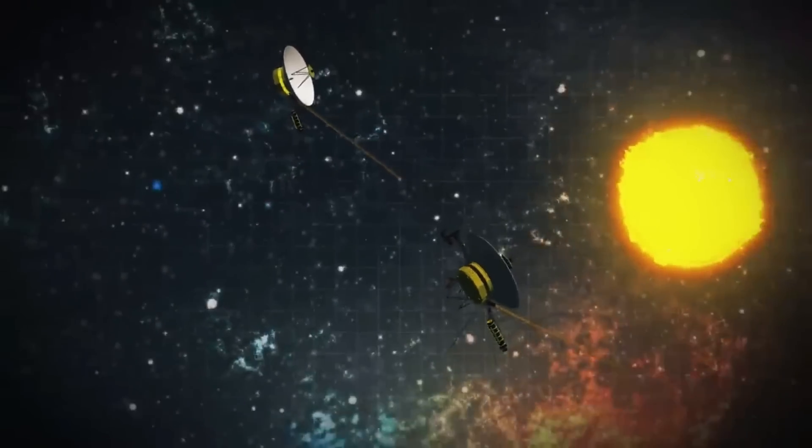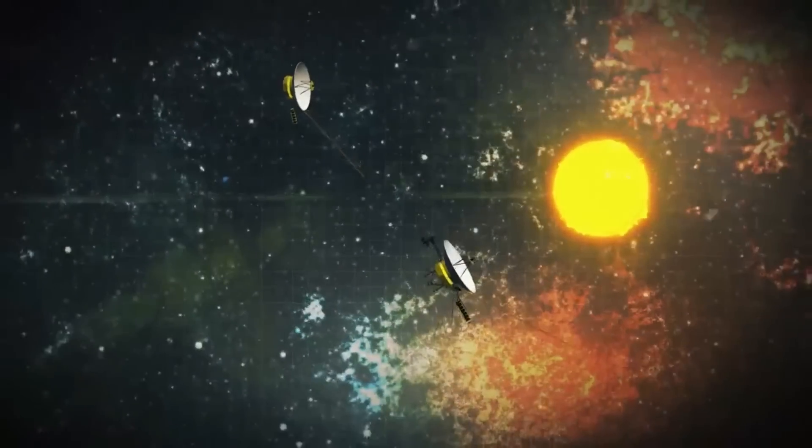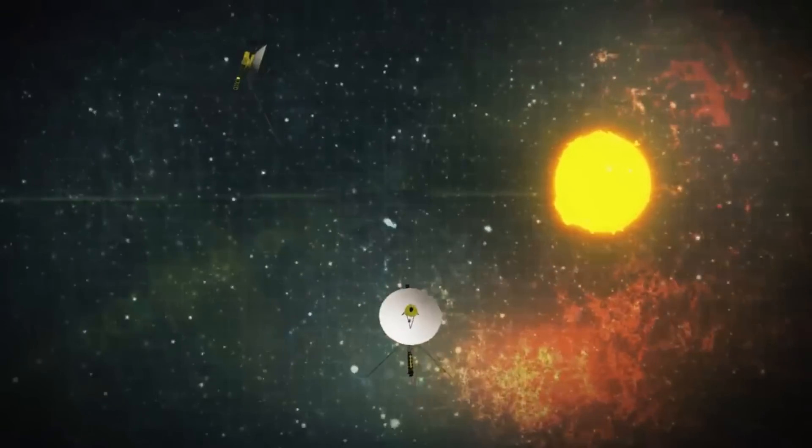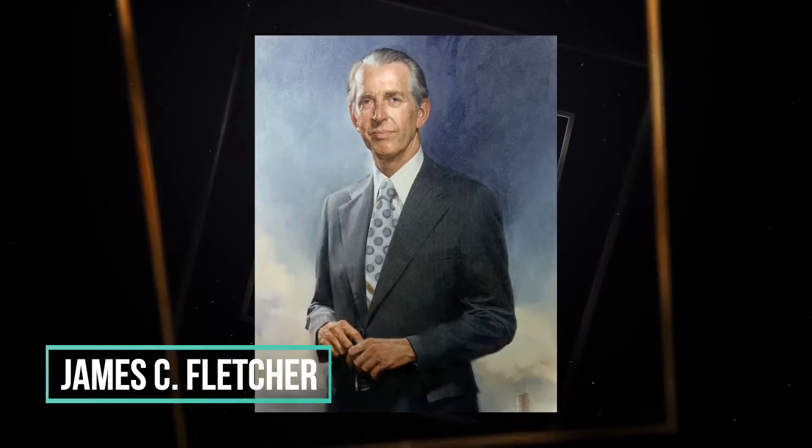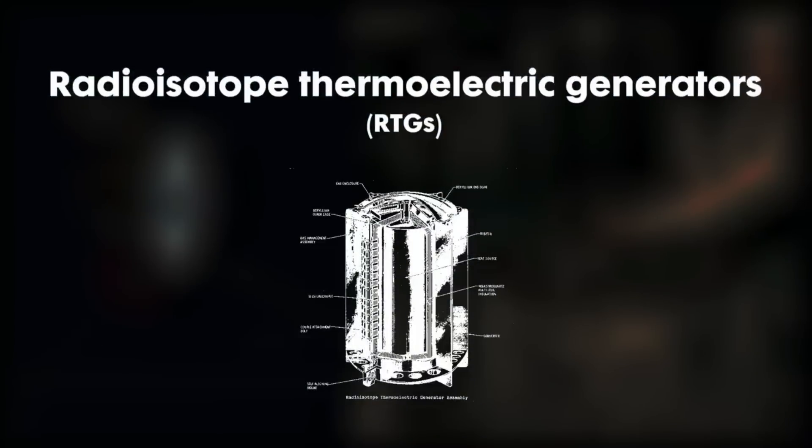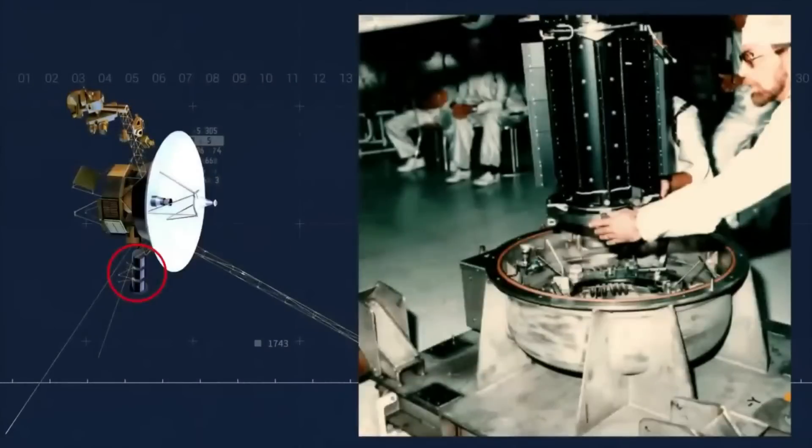The two spacecraft were based on the older Mariners and were called Mariner 11 and Mariner 12 until March 7, 1977, when NASA Administrator James C. Fletcher stated that they would now be called Voyager. Three radioisotope thermoelectric generators, or RTGs, made power. They were placed at the end of a boom.